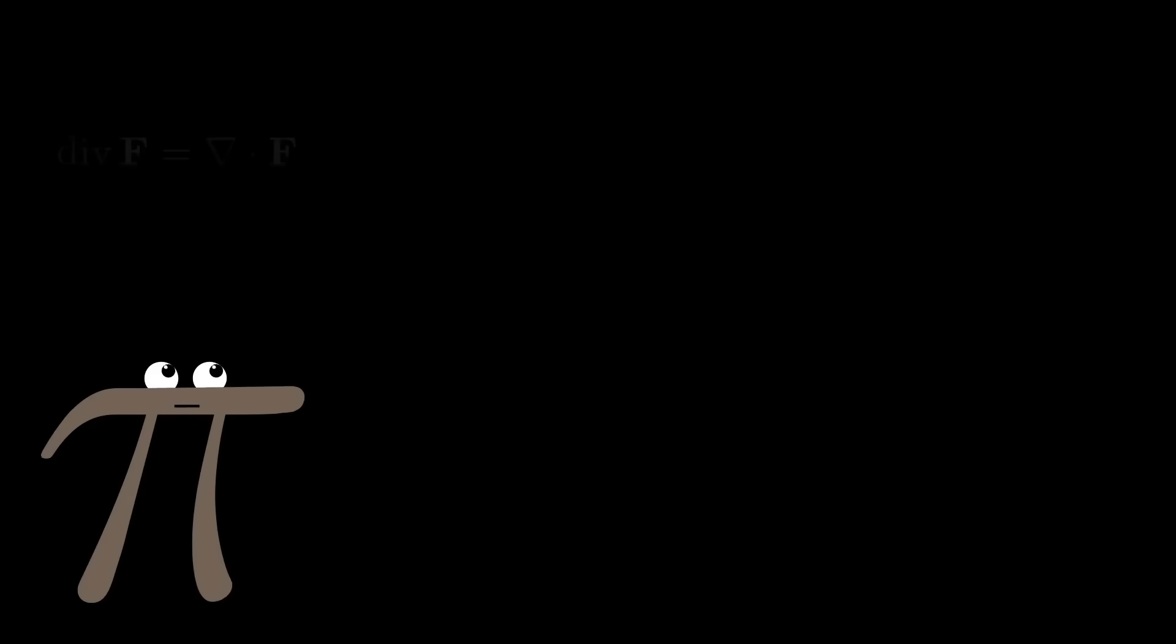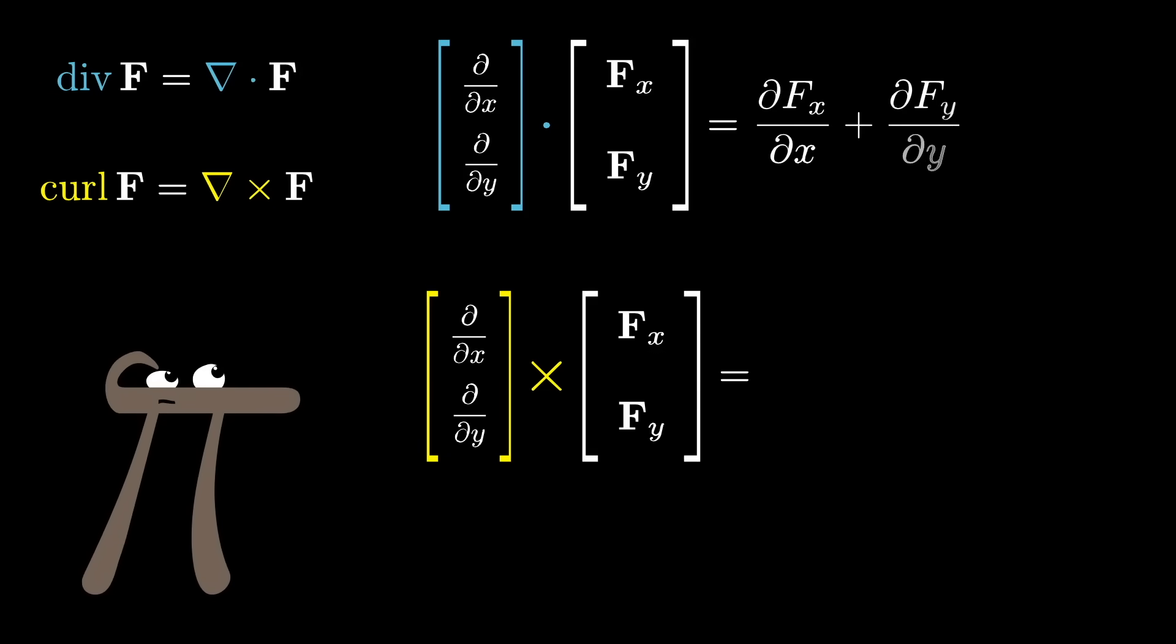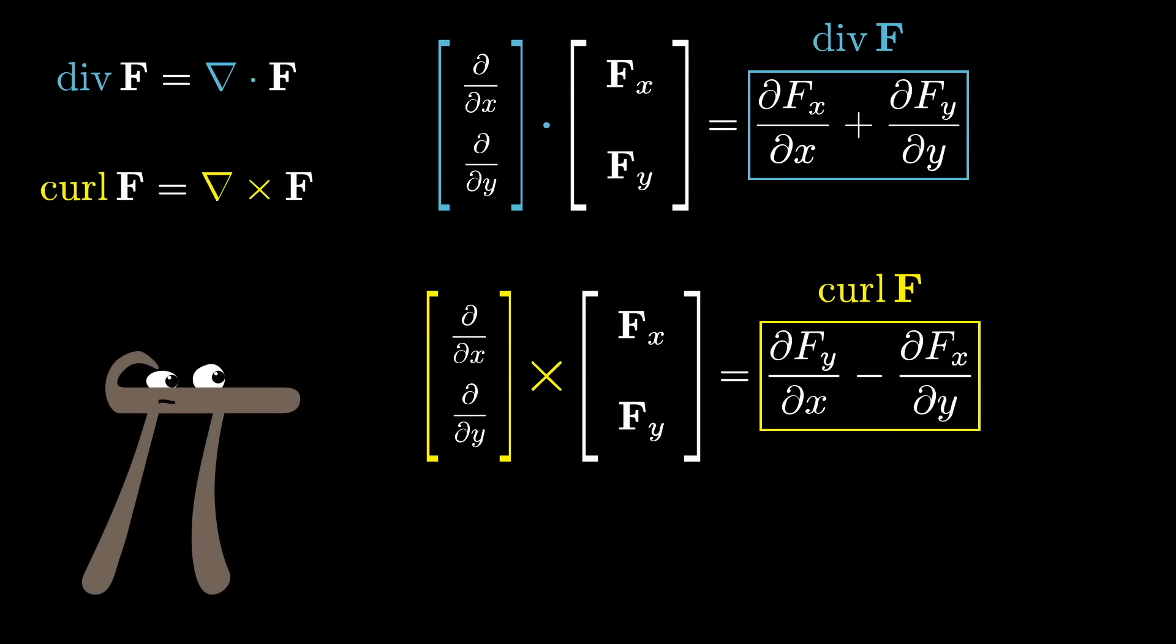Commonly, the divergence is written as a dot product between this upside-down triangle thing and your vector field function, and the curl is written as a similar cross product. Sometimes students are told that this is just a notational trick. Each computation involves a certain sum of certain derivatives, and treating this upside-down triangle as if it was a vector of derivative operators can be a helpful way to keep everything straight.